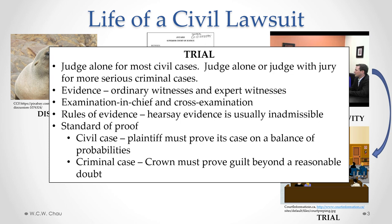In deciding a case, the court will apply a standard of proof. In a civil case, the plaintiff has to prove its version of the facts on a balance of probabilities — meaning that based on the evidence presented, the plaintiff's version is more than 50% likely to be the true version versus the defendant's version. With a criminal case, the standard of proof is much higher. The Crown has to prove guilt beyond a reasonable doubt.